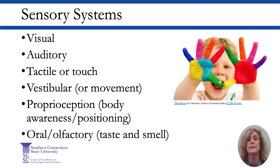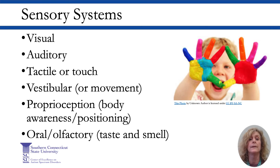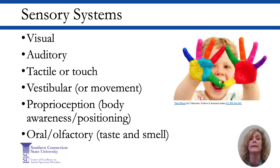The sensory systems include: the visual system, a response to the visual environment; the auditory system, a response to sounds; the tactile or touch system; the vestibular or movement system; the proprioceptive system, which incorporates body awareness and body position; oral sensory, referring to the mouth and sense of taste; and finally, the olfactory system, referring to the sense of smell.